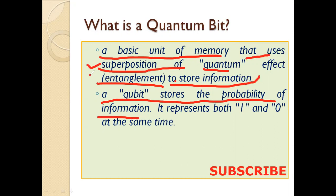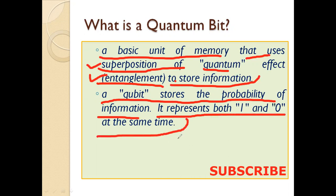You are getting some new terms here: superposition, which we will discuss today, and entanglement, which we will discuss in later classes. These terms are very important as they are introduced in this subject. A qubit stores the probability of information, and it represents both one and zero at the same time. I know this definition sounds strange, but everything will be clear by the end of this lecture.